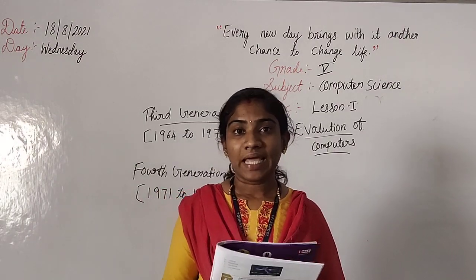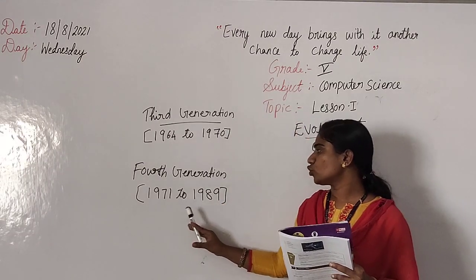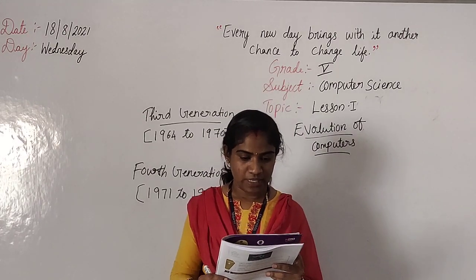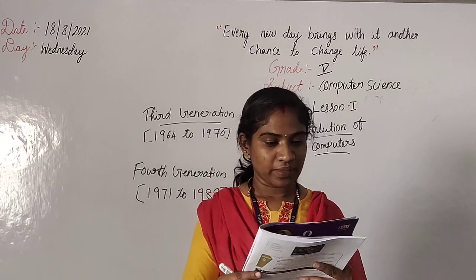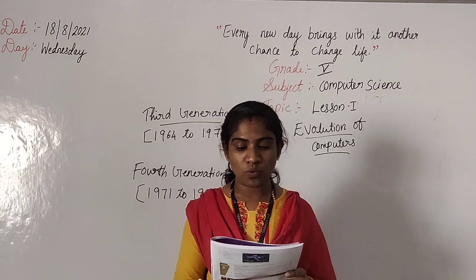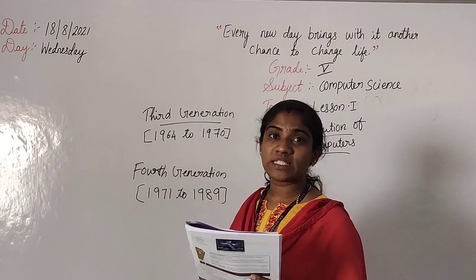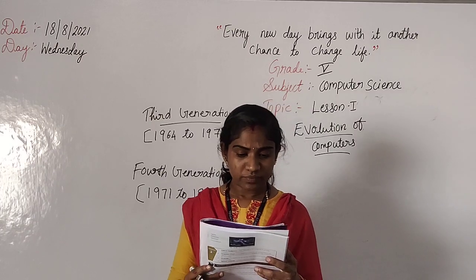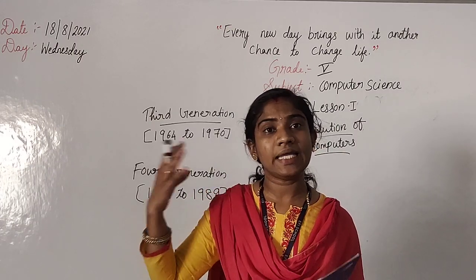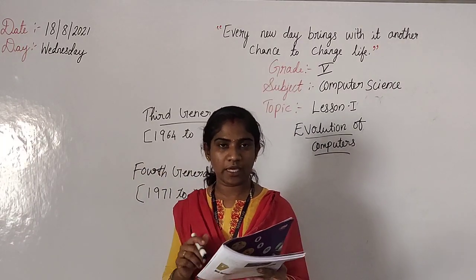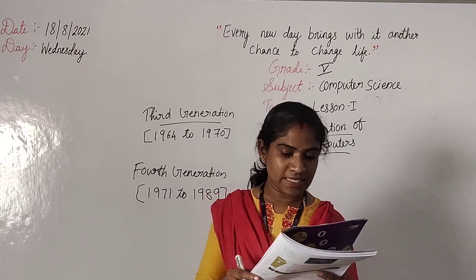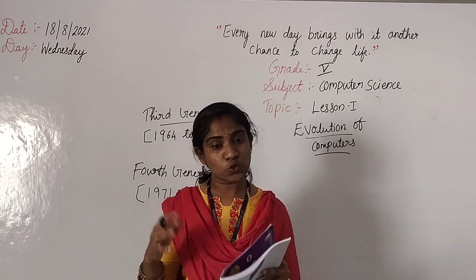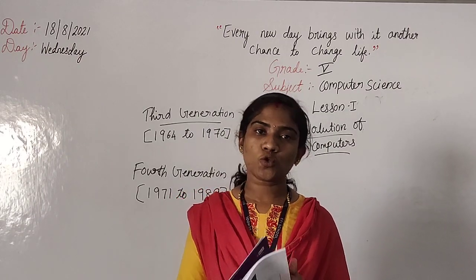Fourth generation computer — the microprocessor age, started 1971 to 1989. It became smaller in size. The microprocessor was developed in fourth generation. It was much faster, became cheaper, and we can use high-level languages like C and C++. Some fourth generation computers: Cray-1, a supercomputer, and Cray XMP, also a supercomputer. Hope you can understand.